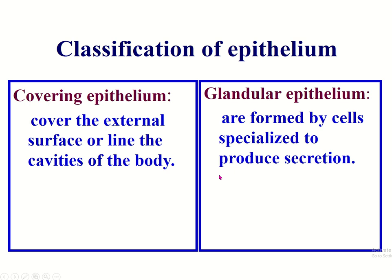The classification of epithelium: there are two types present in our body — covering epithelium and glandular epithelium. Covering epithelium covers the external surface or internal lining of body cavities. Glandular epithelium sometimes remains connected with the covering epithelium, forming an exocrine gland, and sometimes loses that connection, forming an endocrine gland.